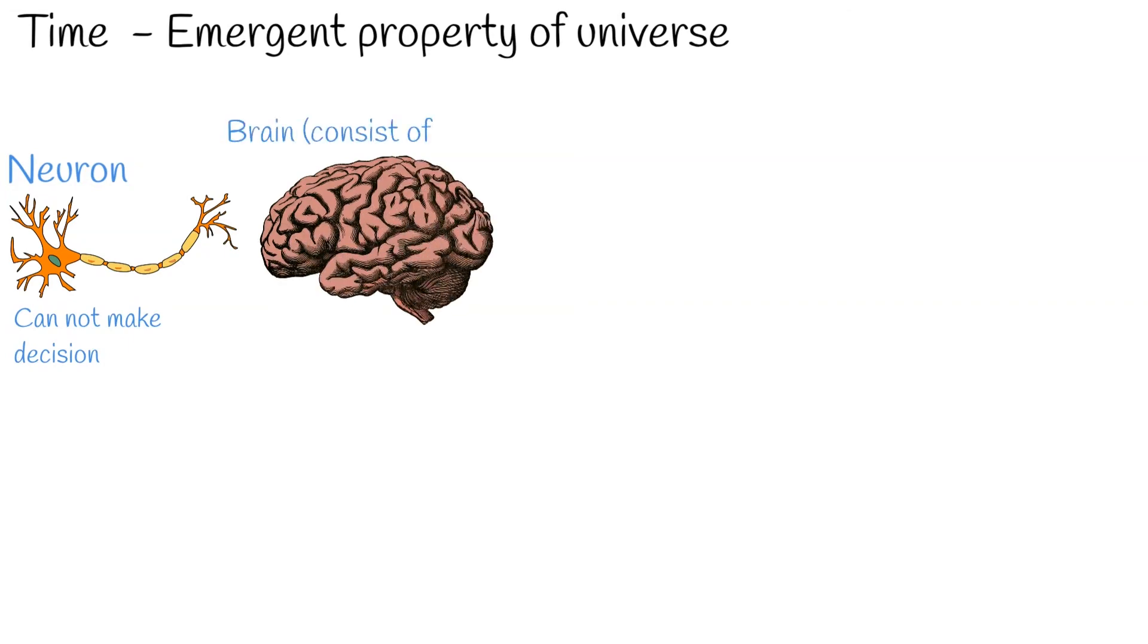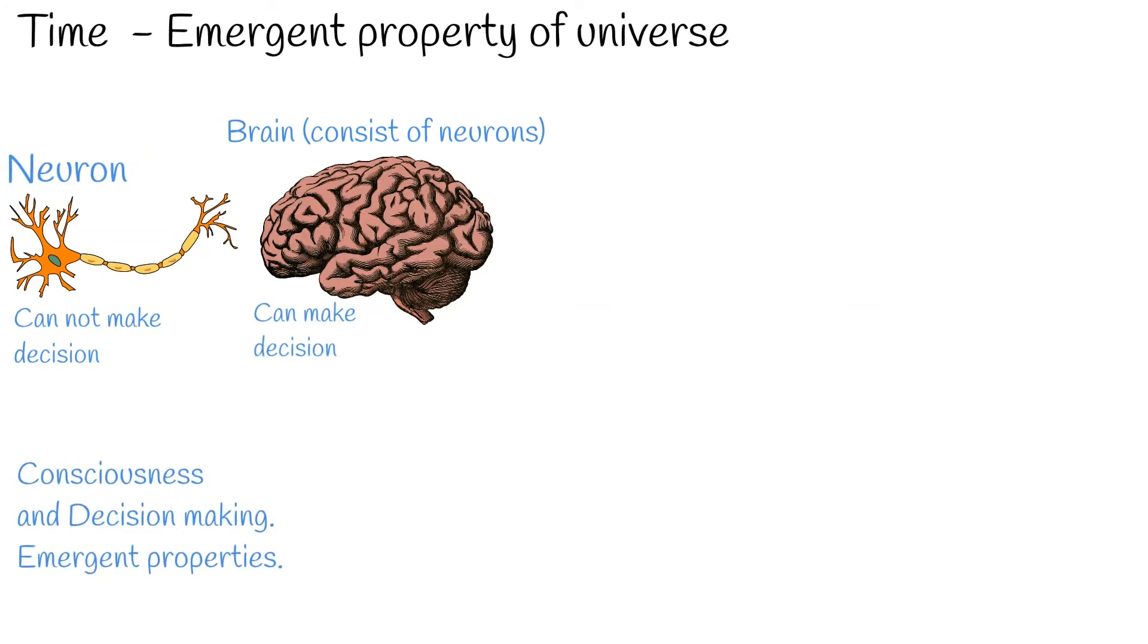For example, one neuron doesn't have ability to make decisions and doesn't have consciousness. But whole brain has consciousness and can make decisions.